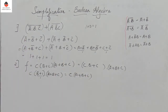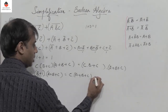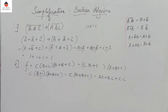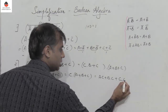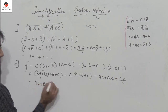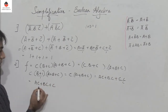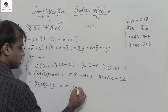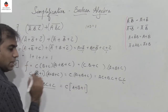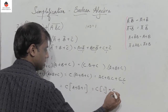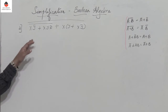Expanding c(a + b + c): we get ac + bc + c·c = ac + bc + c. Taking c common from all three terms gives c(a + b + 1). Since 1 + anything = 1, we get c·1 = c. So the simplified answer is c.